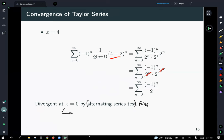But then if you take the divergence test, it gives us the divergence that we're after because the limit will not go to 0, it'll oscillate. And that's it for Taylor series.